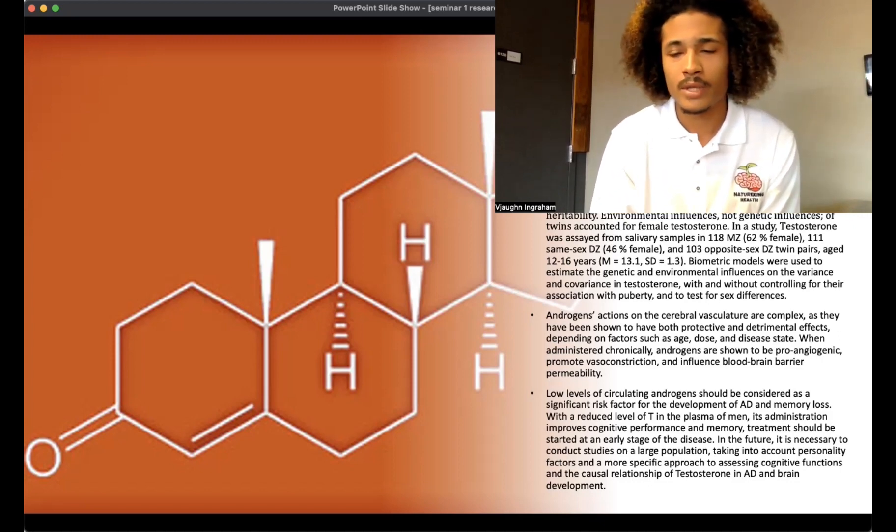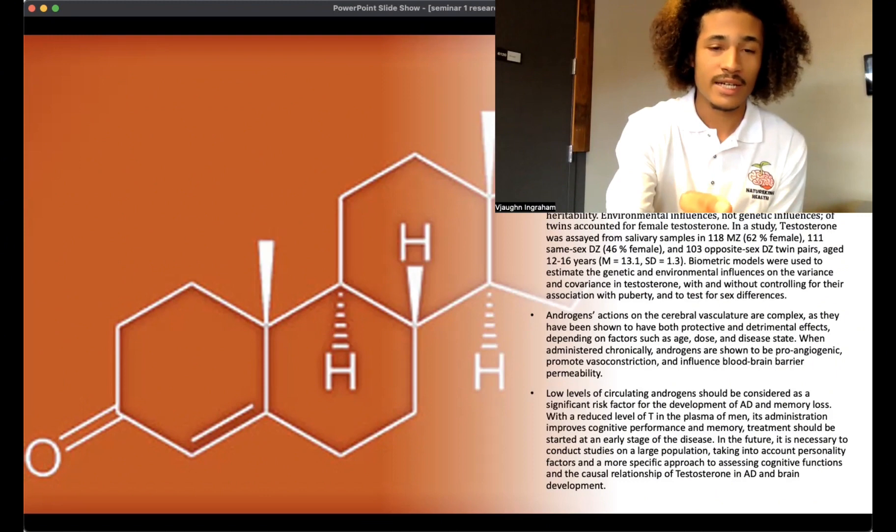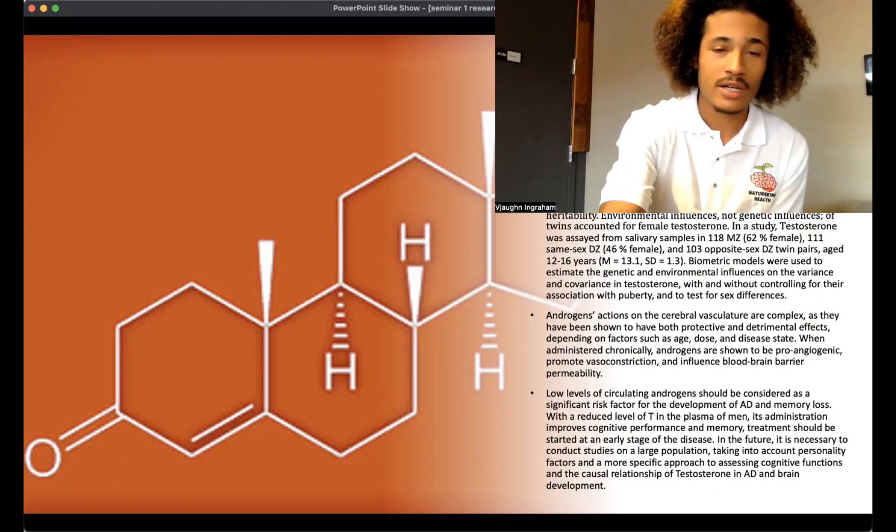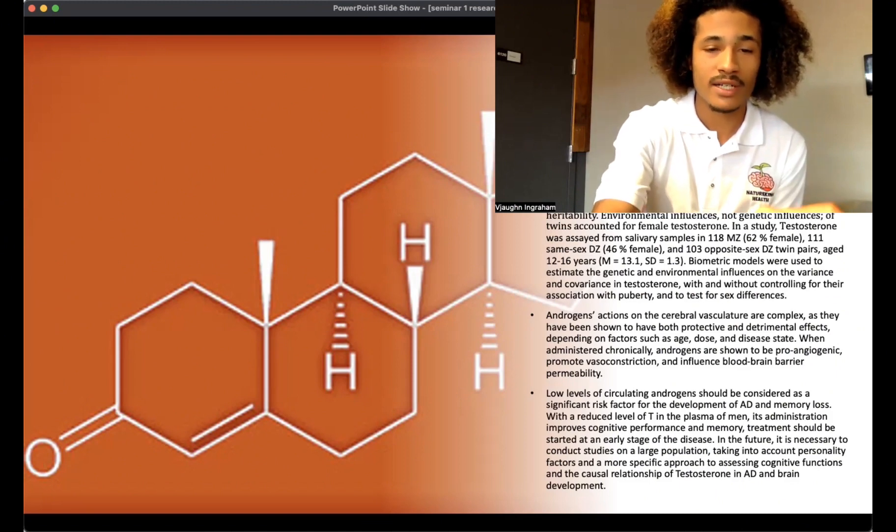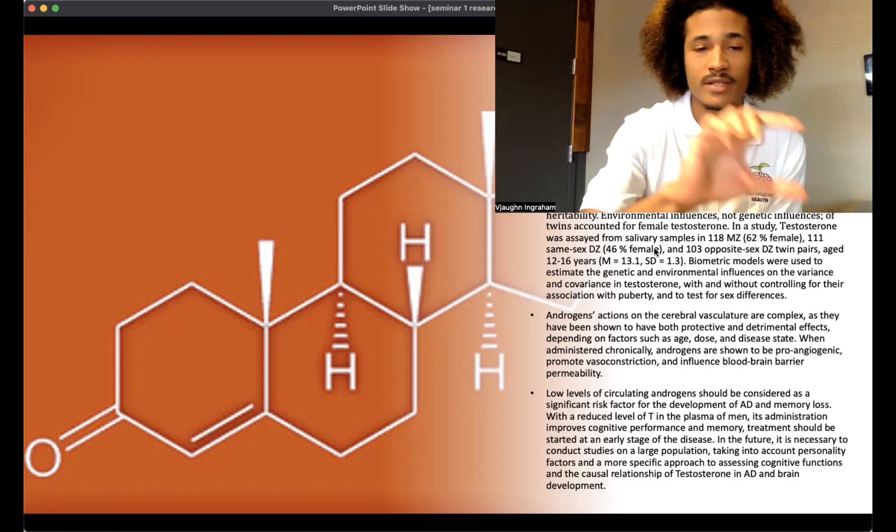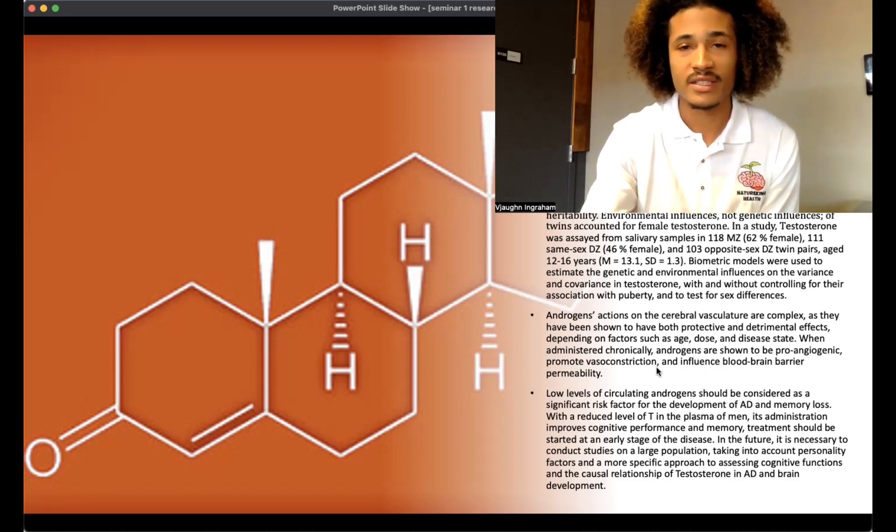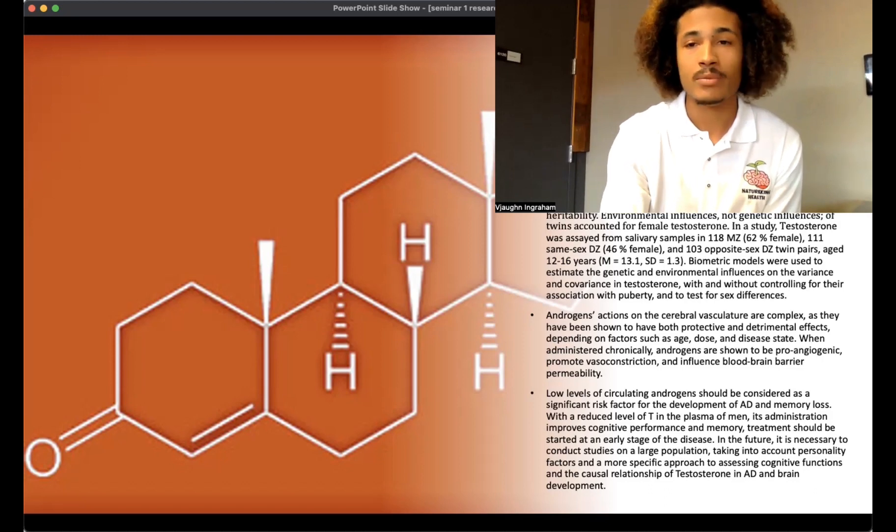If many aren't familiar with the term testosterone, testosterone is a steroid hormone. As you can see on the diagram I have here, this is basically the chemical structure and makeup. You see the oxygen double bond at the end, and you see all the hydrogen bonds in this specific molecule. All these things together essentially is what makes it this great steroid hormone.